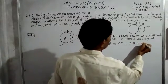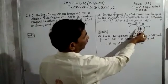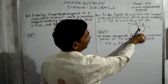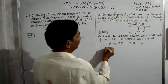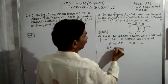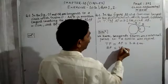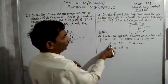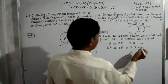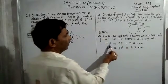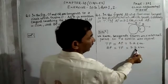Similarly, looking at the smaller circle, the two tangents from point P are TP and BP. So we can write BP is equal to TP. Since TP equals 3.2 centimeters, we get BP is also equal to 3.2 centimeters.